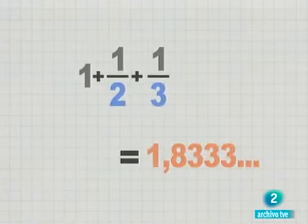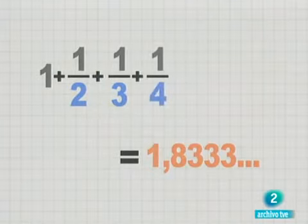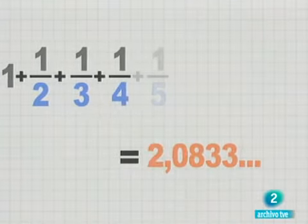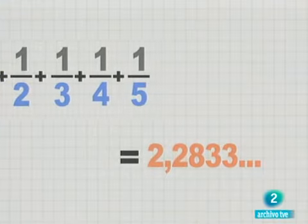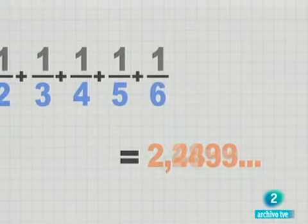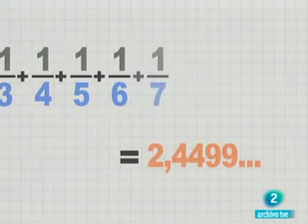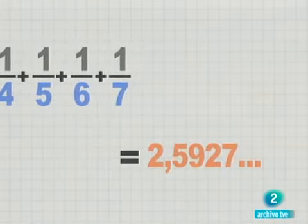Esta serie es la suma de los inversos de los números naturales y llega a ser más grande que cualquier número que nos podamos imaginar, por grande que éste sea. Es una serie divergente, como ya demostró Jan Bernoulli, el maestro del joven Euler.